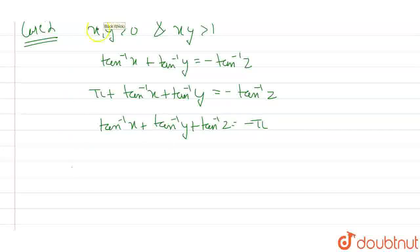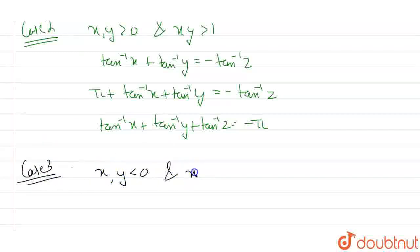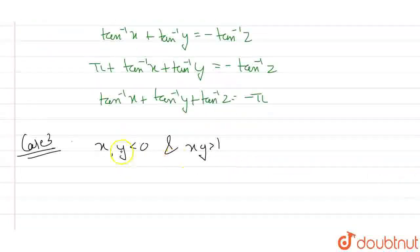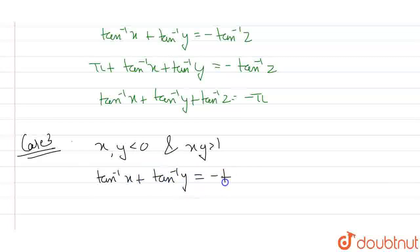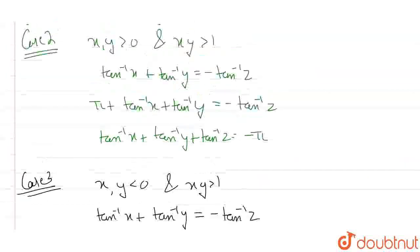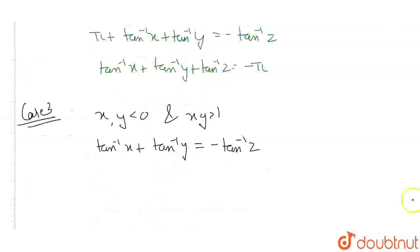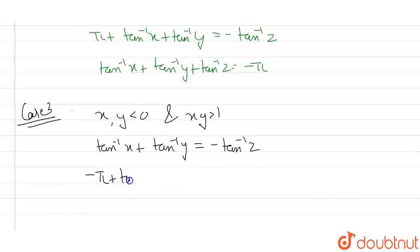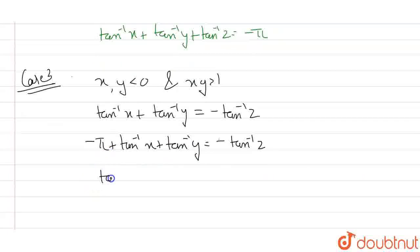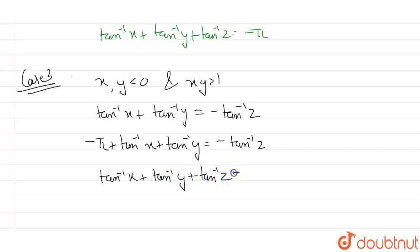In case three, my x and y values are less than zero and xy is greater than one. In that case, the result from basic trigonometric properties gives: minus pi plus tan inverse x plus tan inverse y equals minus tan inverse z. So the value of tan inverse x plus tan inverse y plus tan inverse z comes out to be pi.